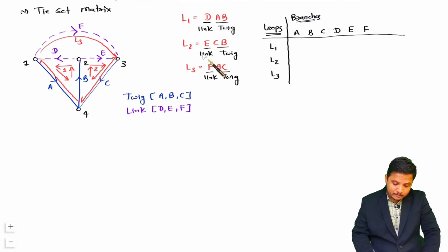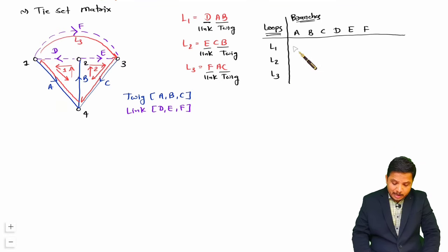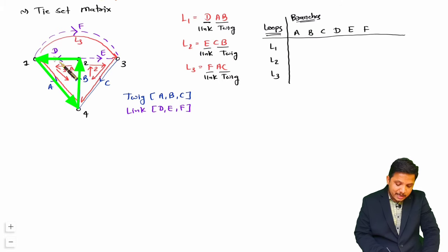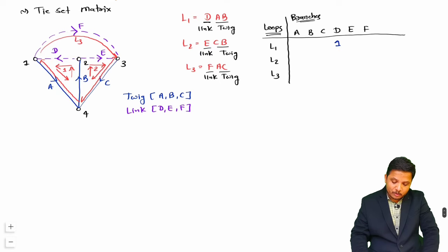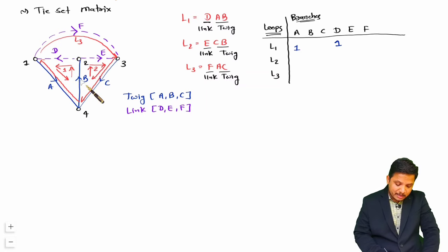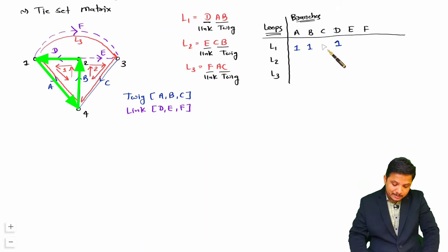Now identify the coefficients as per the connection of each loop. The loop direction should be in the direction of the link. In loop L1, D is in the direction of L1 so write 1; A is also in the direction of L1 so write 1; B is also in the direction of the loop so write 1; and C, E, F are not connected so write 0.